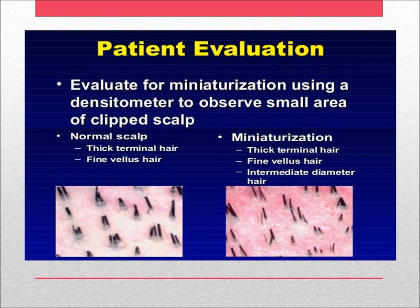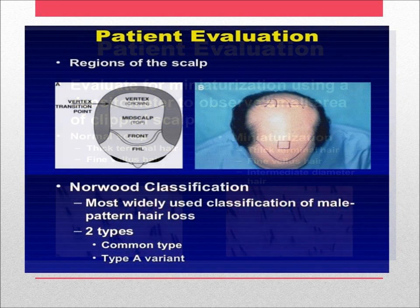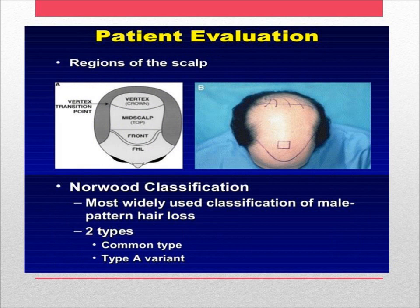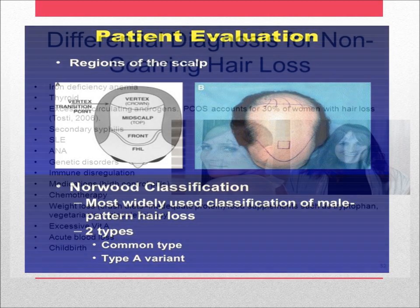Patient evaluation: you can see normal scalp and miniaturization. In a normal scalp, there is thick terminal hair and fine vellus hair. Miniaturization is characterized by thick terminal hair, fine vellus hair, and intermediate diameter hair. You can also see the regions of the scalp. The Norwood classification is the most widely used classification of male pattern hair loss, and is of two types: common type and type A variant.